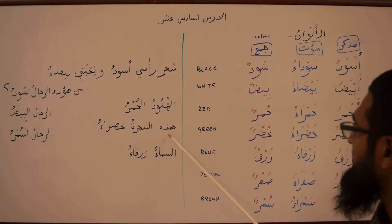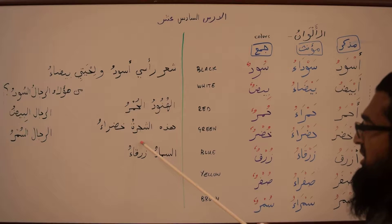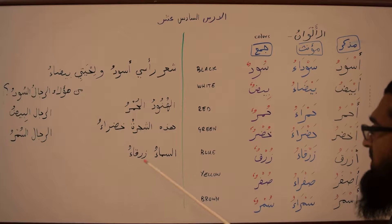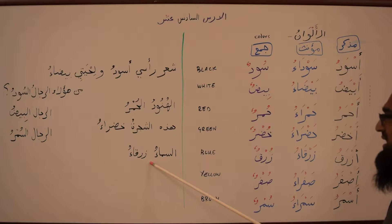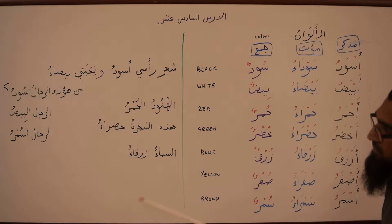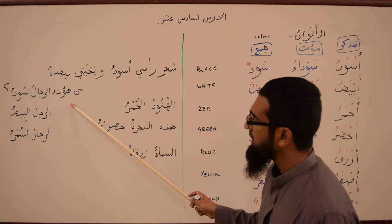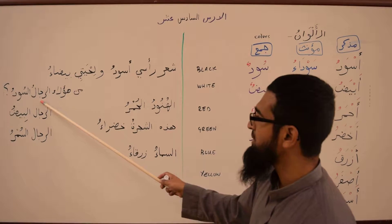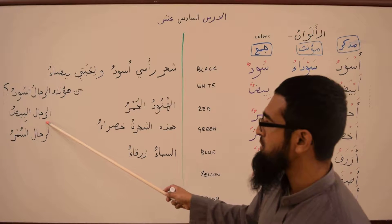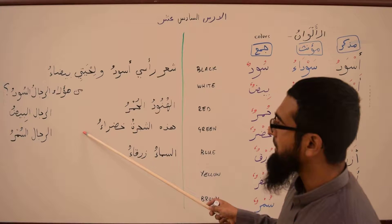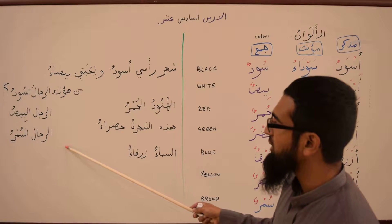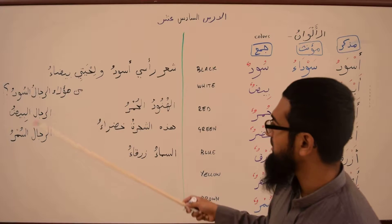We have an example of khadra: Hadhihi shajaratun khadra — this tree is green. Assama'u zarqa — the sky is blue, because the word sama'u is muanath. You can also say: Man ha'ulai arrijal al-beed — who are these white men? And assumr — brown men.